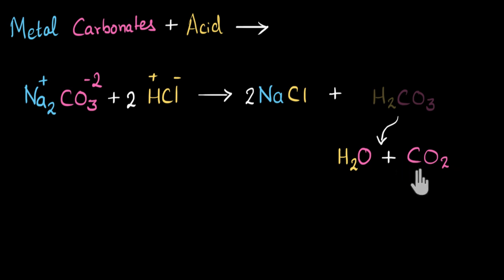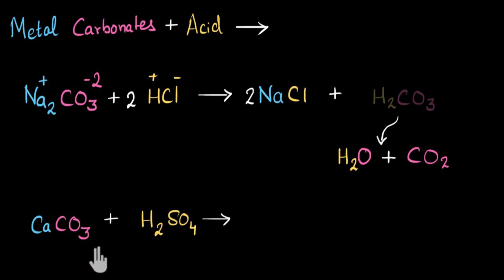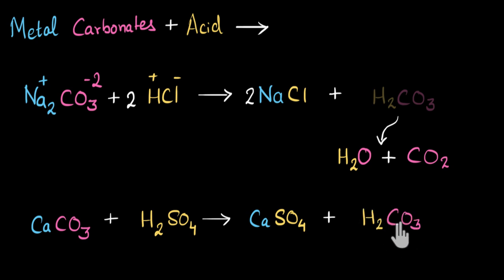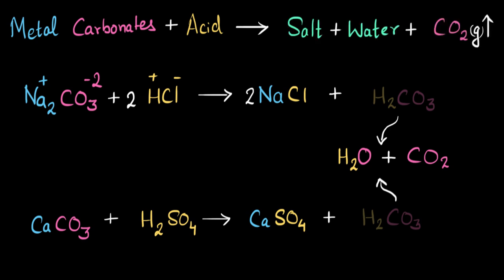Now before we confirm this, let's look at one more example. This time I'm taking calcium carbonate and reacting it with another acid, sulfuric acid, H₂SO₄ — also a double displacement reaction. Calcium will get attracted to the sulfate ion and form calcium sulfate, CaSO₄, and hydrogen will get attracted to carbonate and form H₂CO₃. H₂CO₃ is not very stable — it will further dissociate and give us water and carbon dioxide. So we can confirm: a metal carbonate reacts with an acid to give salt, water, and carbon dioxide gas.